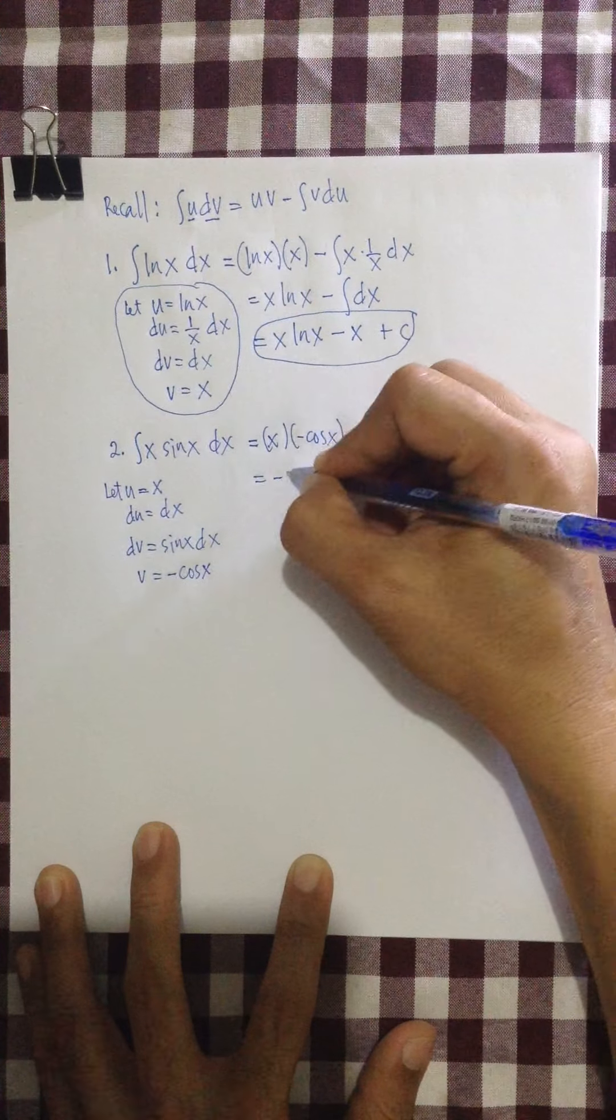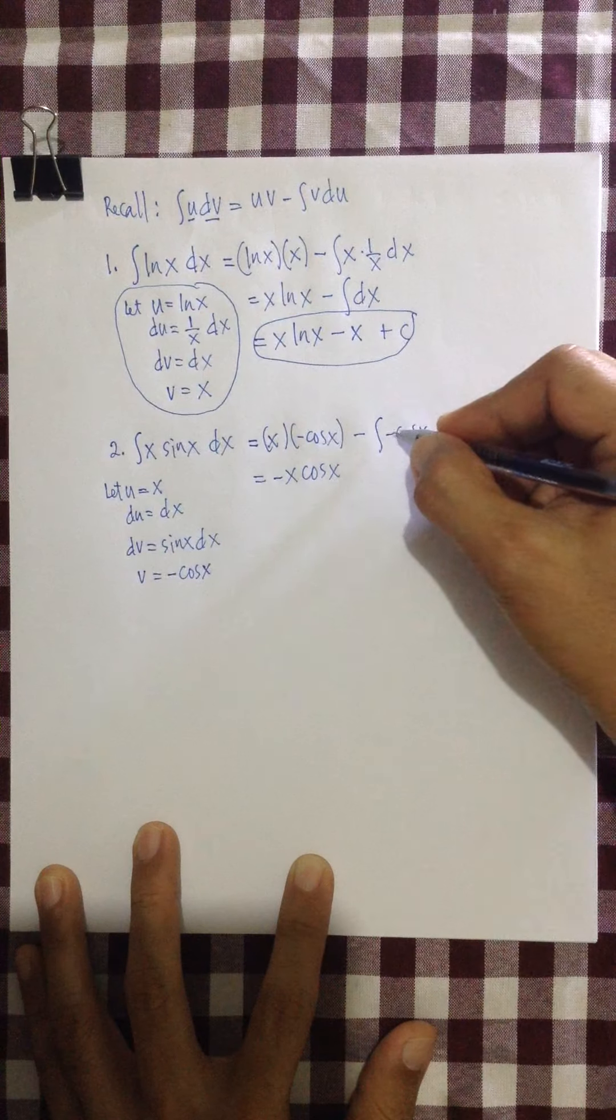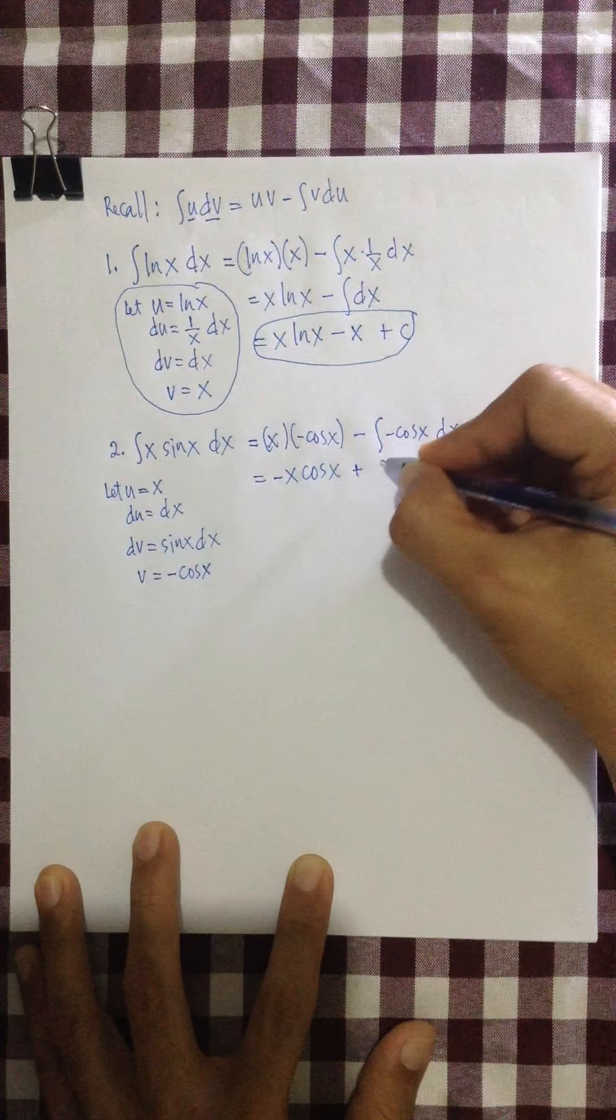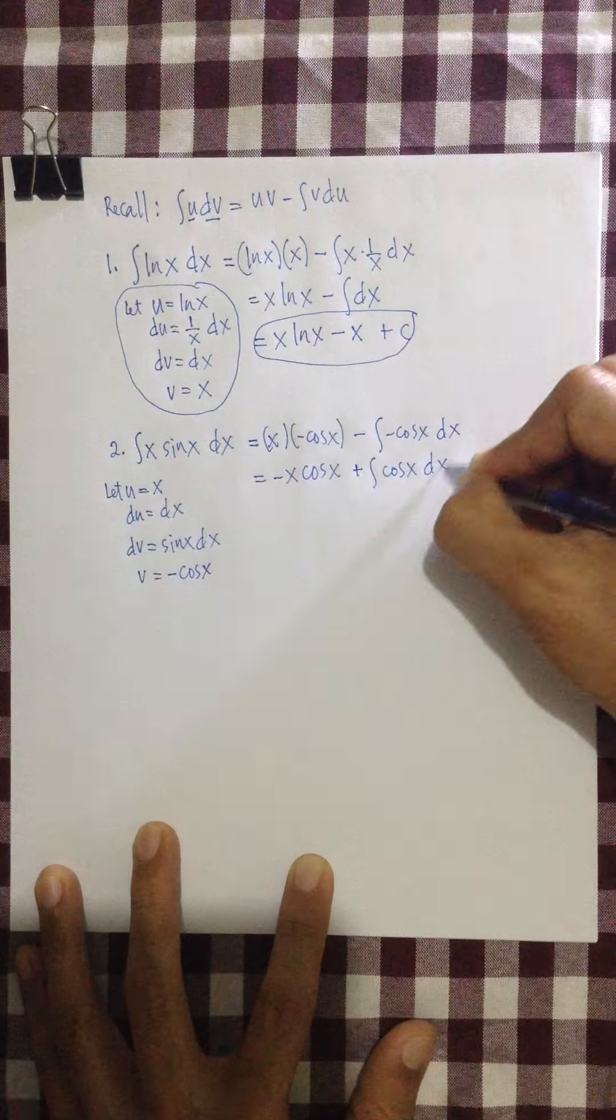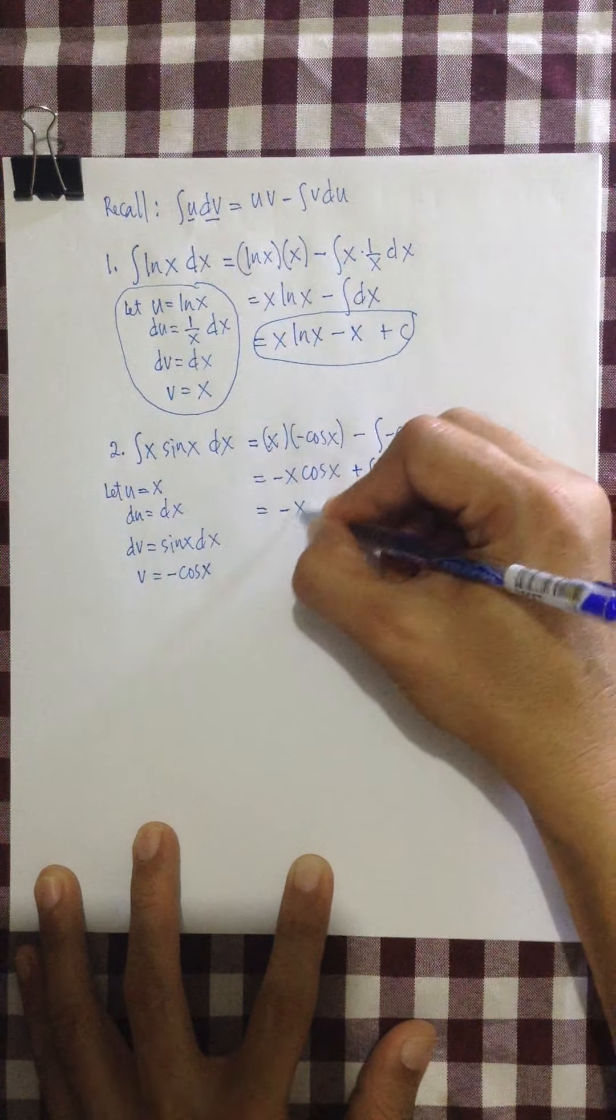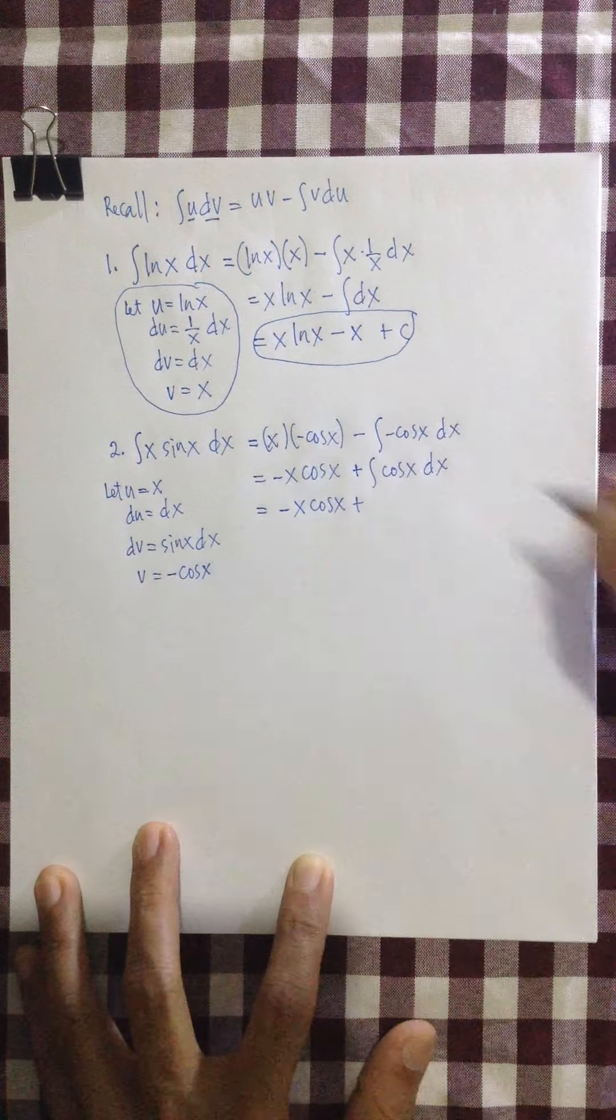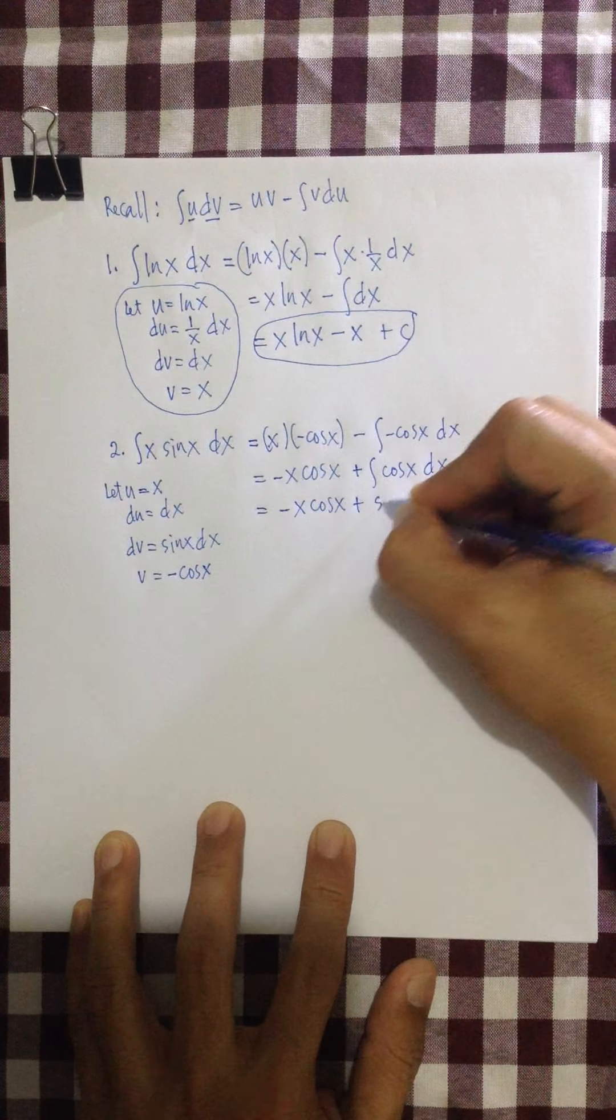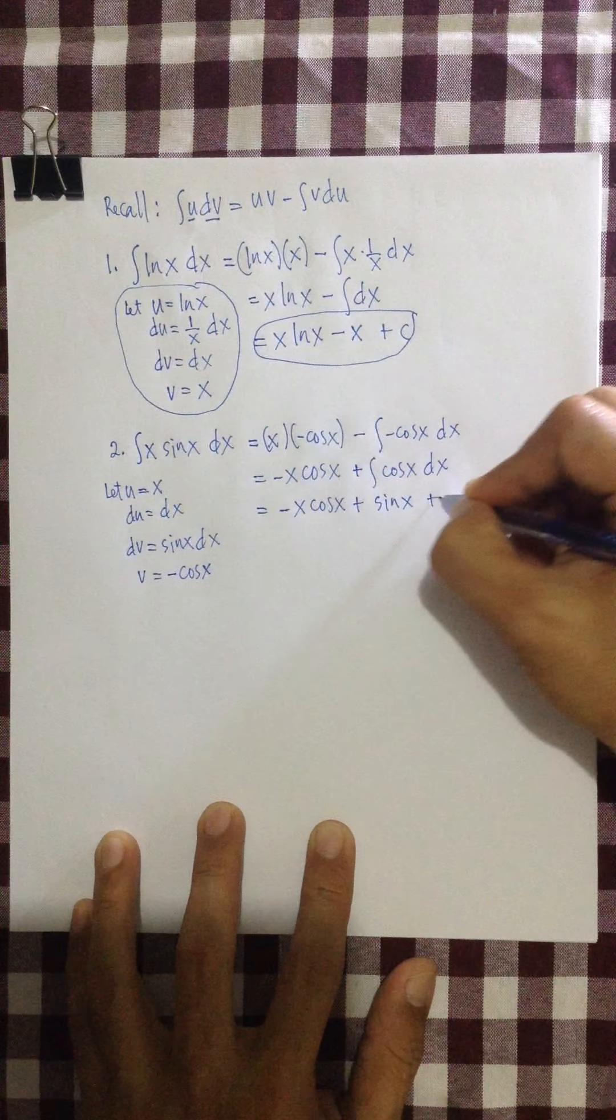Then simplifying, we have negative x cosine x. Of course, the negative can be multiplied with this negative here outside. So we have plus integral of cosine x dx. And then, we have negative x cosine x, plus... What is the integral of cosine x dx?